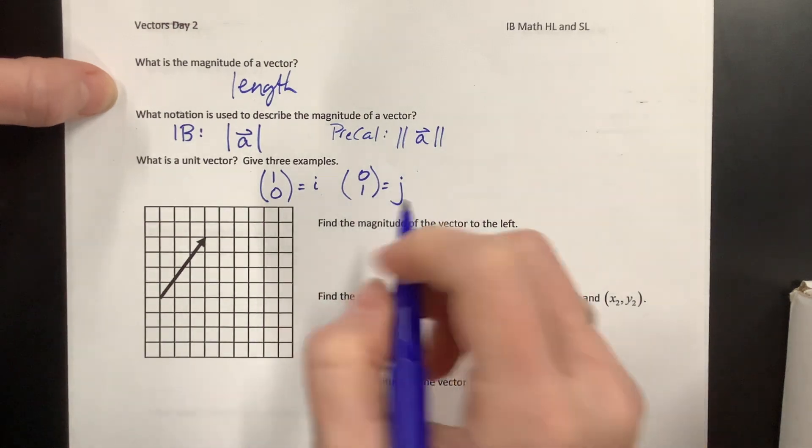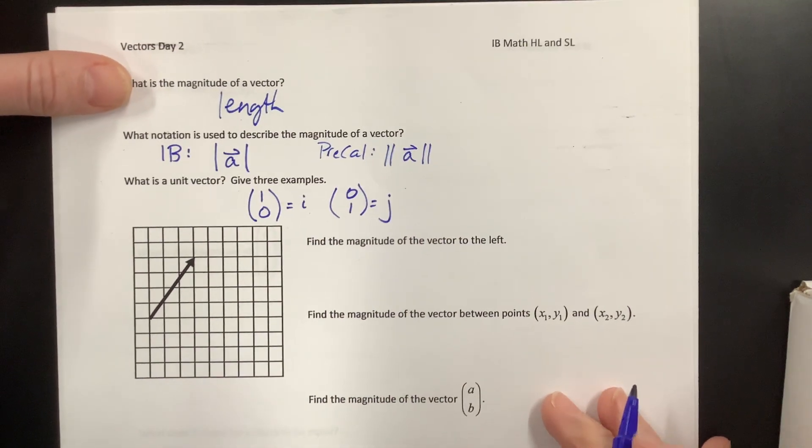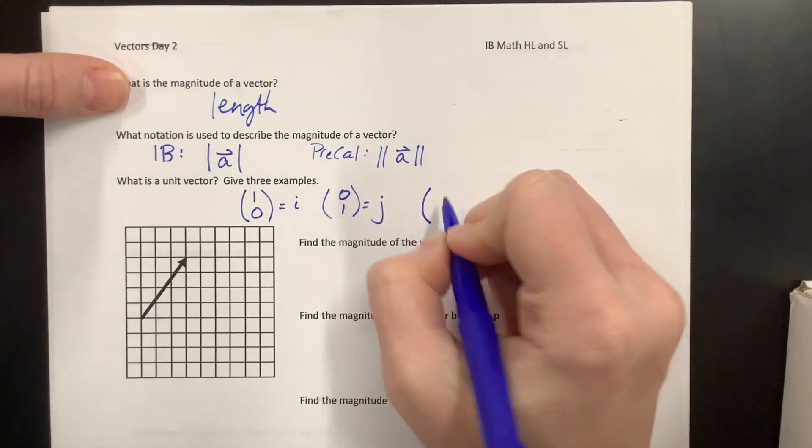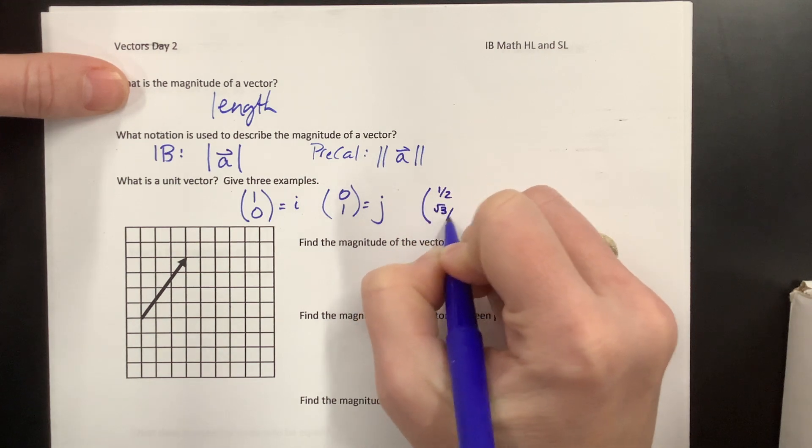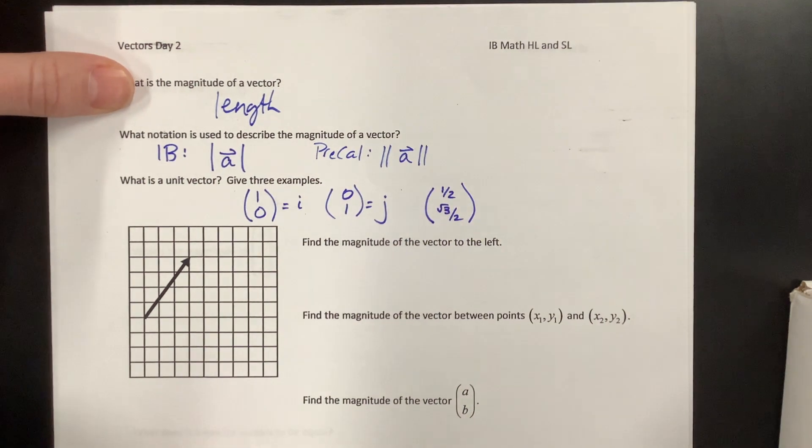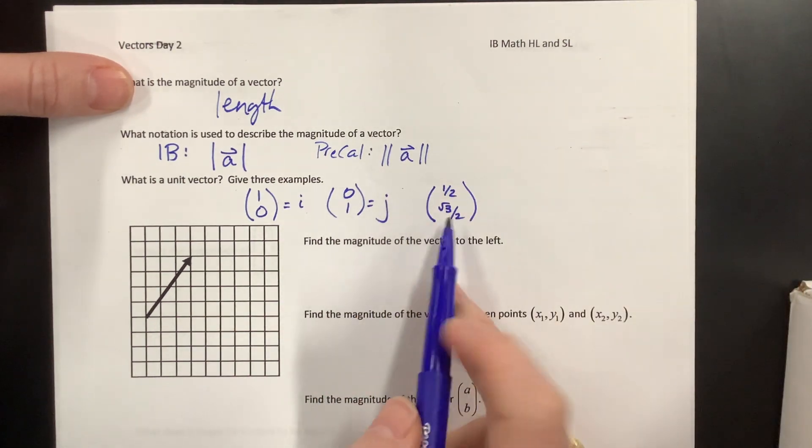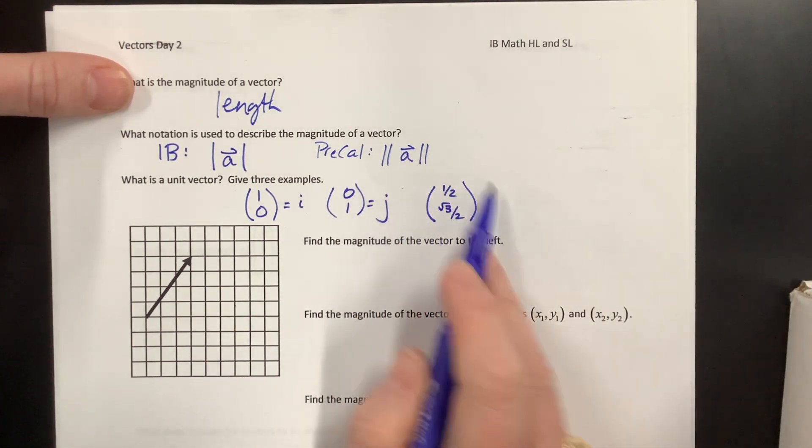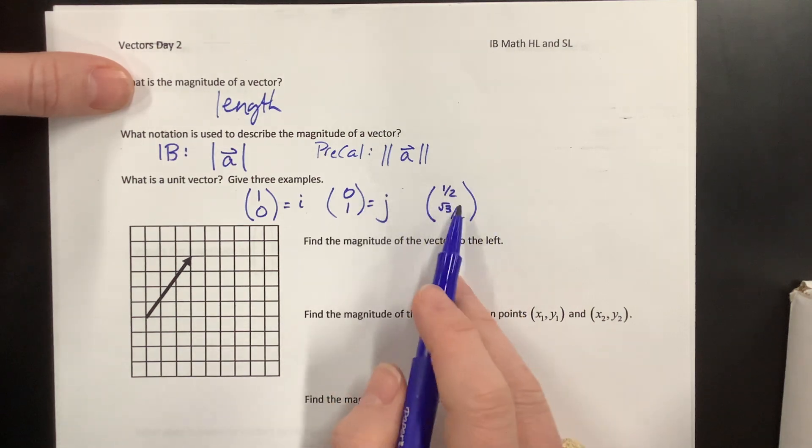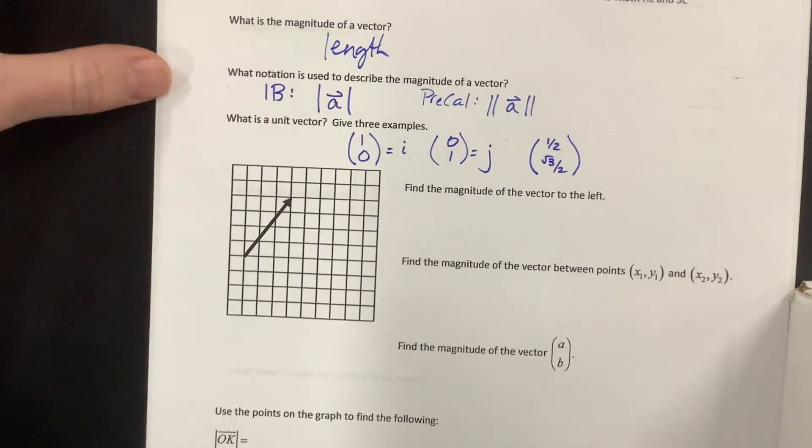And then somebody pointed out in my HL class, I can't remember who, I'm sorry, but that things on the unit circle, so like 1 half root 3 over 2, would also give you a magnitude of 1. So if you think about the different coordinates on the unit circle, this is a unit vector, it's got a magnitude of 1.